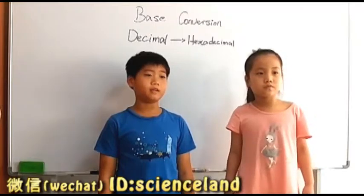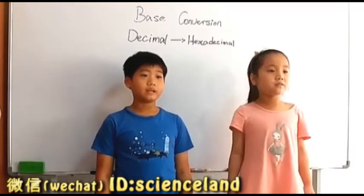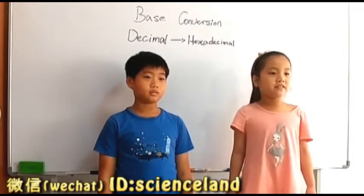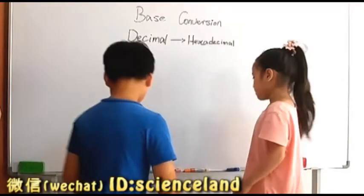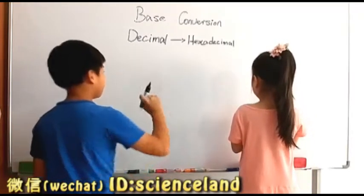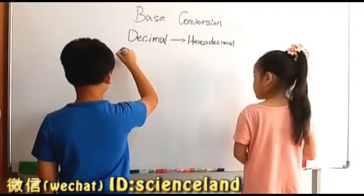Okay, so now let's continue with base conversion, okay? Now it's decimal system to hexadecimal system. So hexadecimal system contains 16 basic numbers, okay?